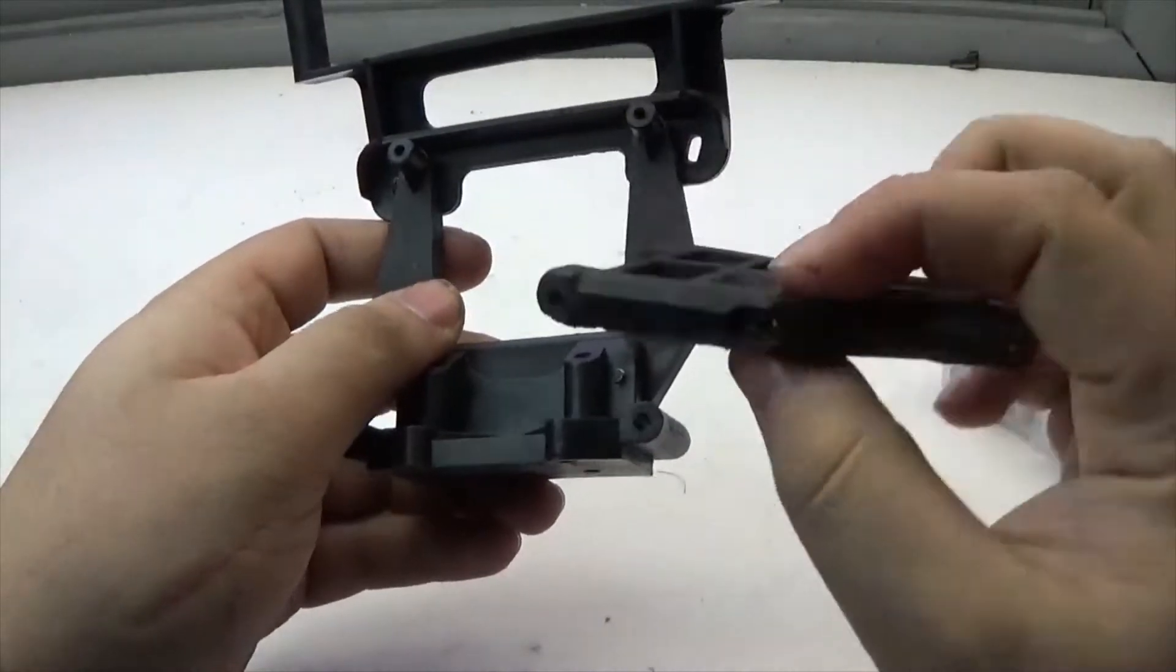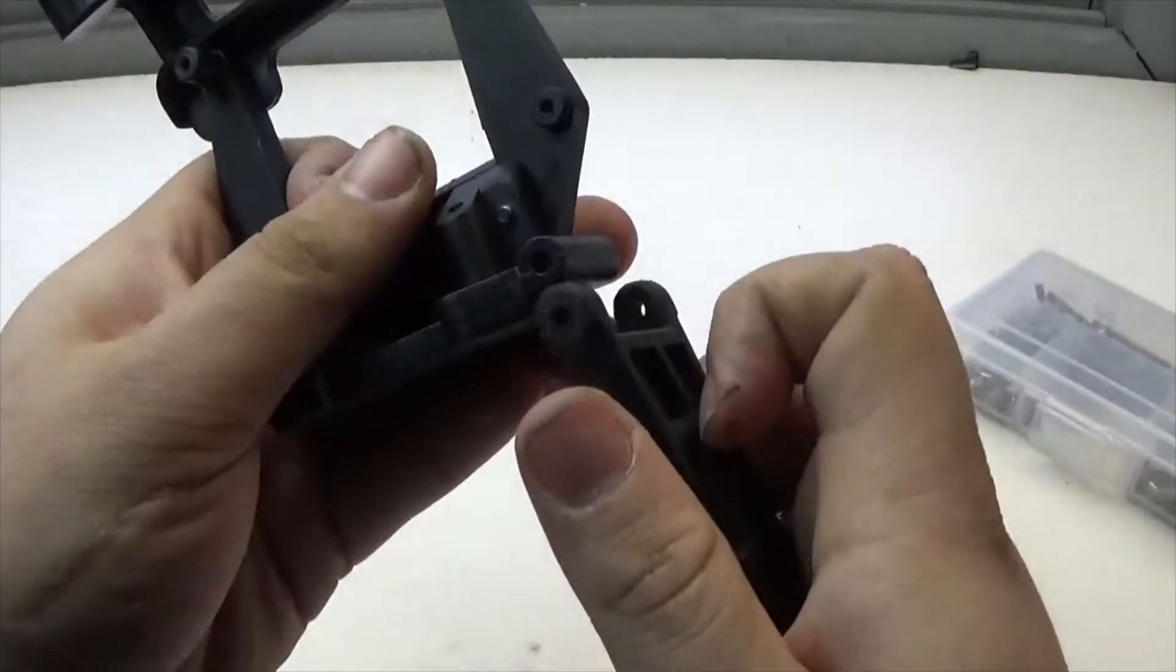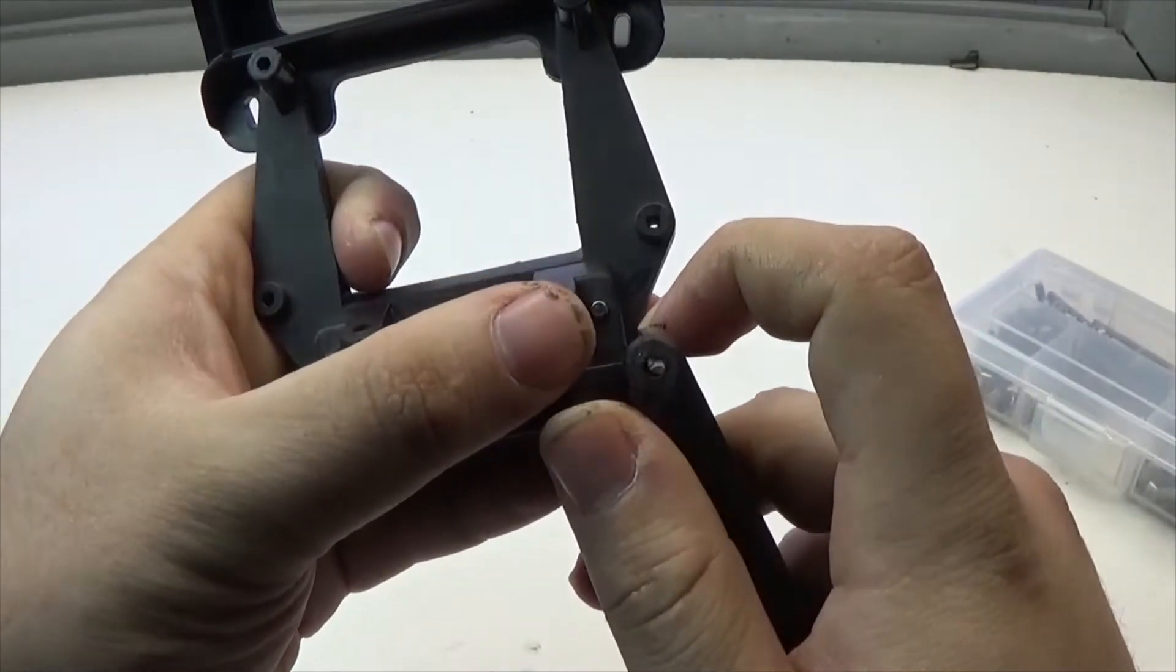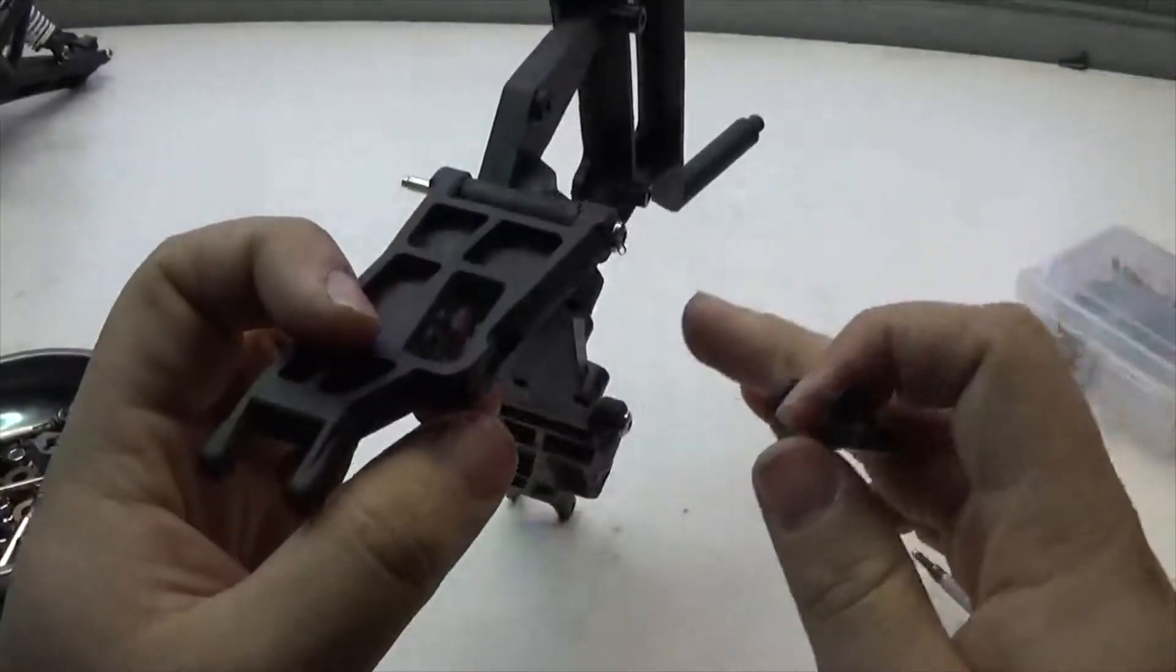Now that we have our main section of the shock tower done, we're going to need to start taking our a-arms, sliding them right over the squat bars, and screw down the one kingpin that holds both of them in place.